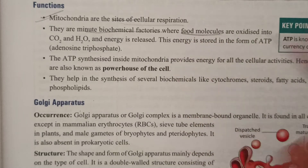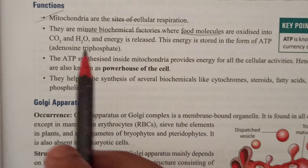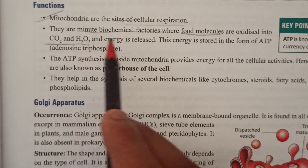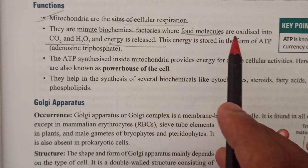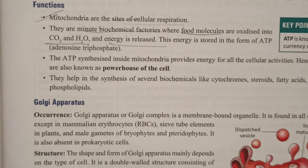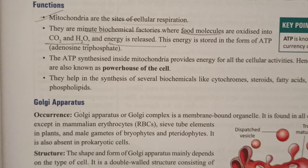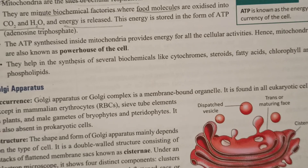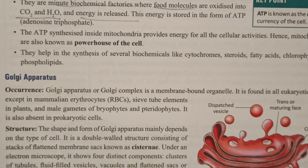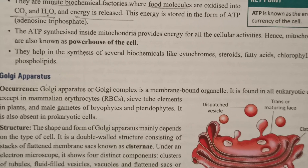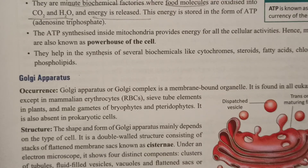Mitochondria are the site of cellular respiration. They are minute biological factories that convert food to energy. They help in CO2 and H2O transport and energy release, using oxygen to generate CO2 and ATP in the cell. They are called the powerhouse of the cell, and also help in synthesis of biochemicals like cytochromes, fatty acids, chlorophyll, and phospholipids.